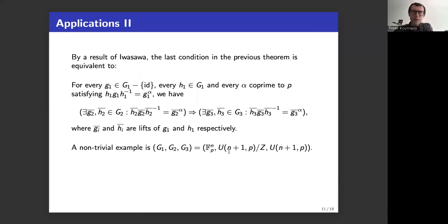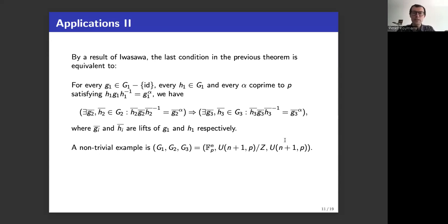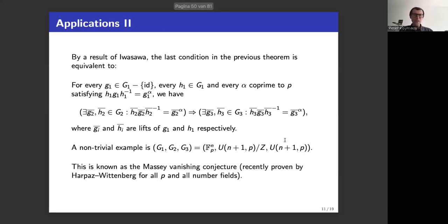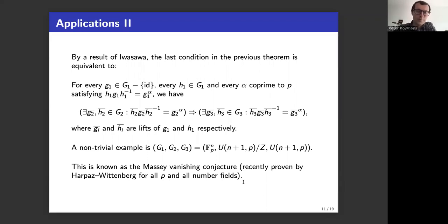The local condition can be rephrased group-theoretically because we understand the maximal pro-p extensions of GQ_v very well. This gives a completely group-theoretic condition on the triple (G1, G2, G3), and any triple satisfying this locally everywhere yields a non-trivial invariant of the absolute Galois group GQ. An example of a non-trivial triple is: FP^N (upper triangular matrices with 1s on diagonal), its abelianization FP^N, and the upper triangular matrices modulo the center. This relates to the Massey-Manning conjecture, recently proved by Harper and Wittenberg for all p and all number fields. Our result reproves this at least for Q and primes p ≠ 2.